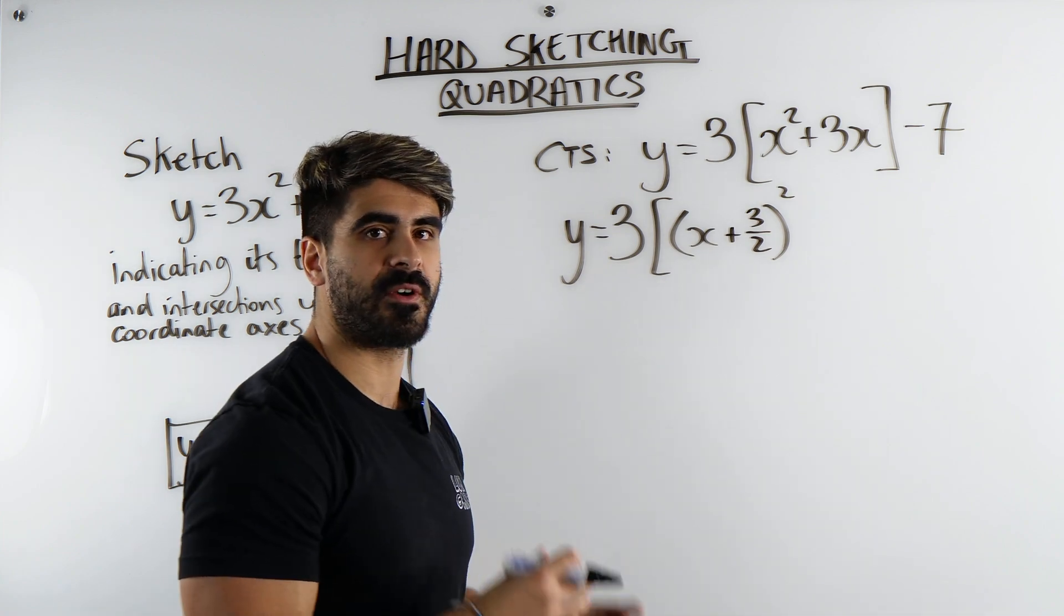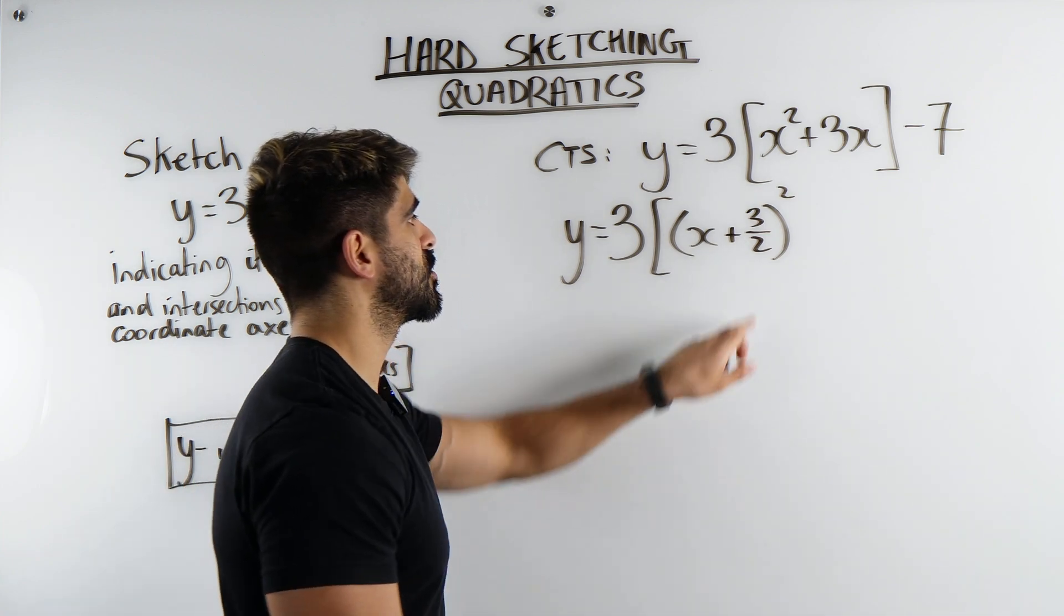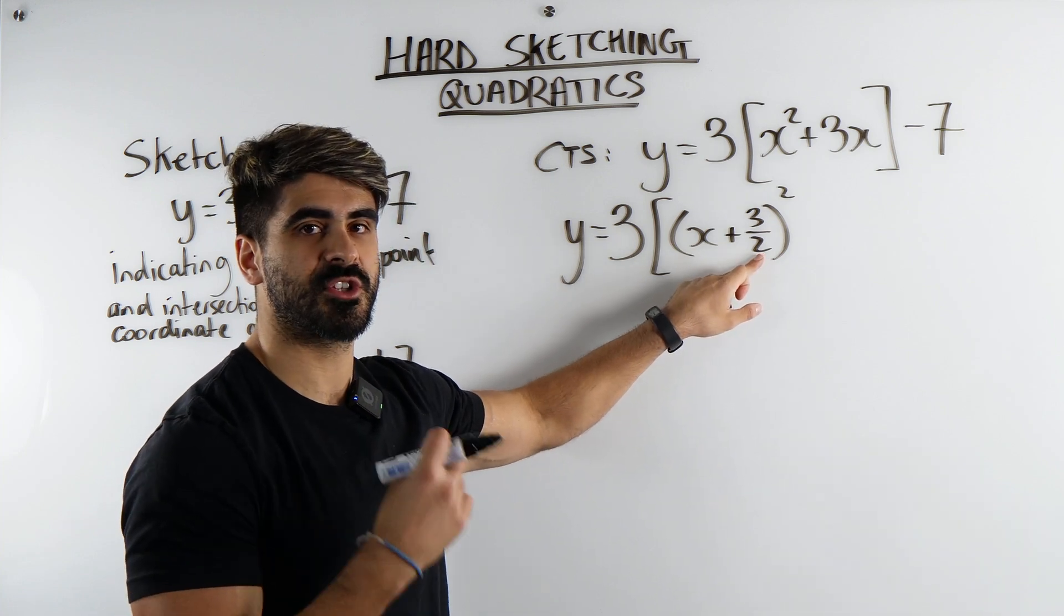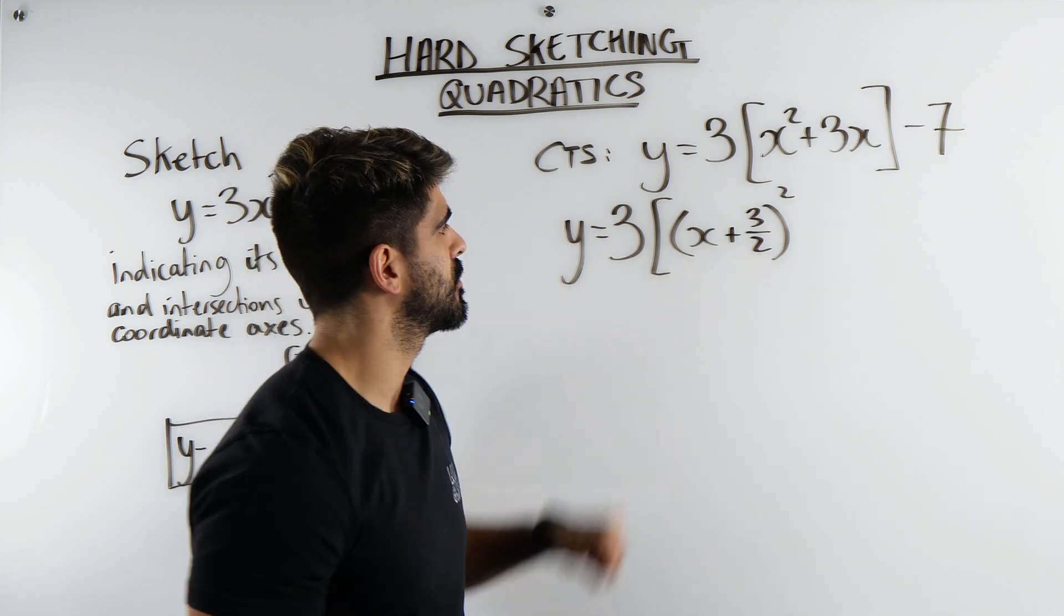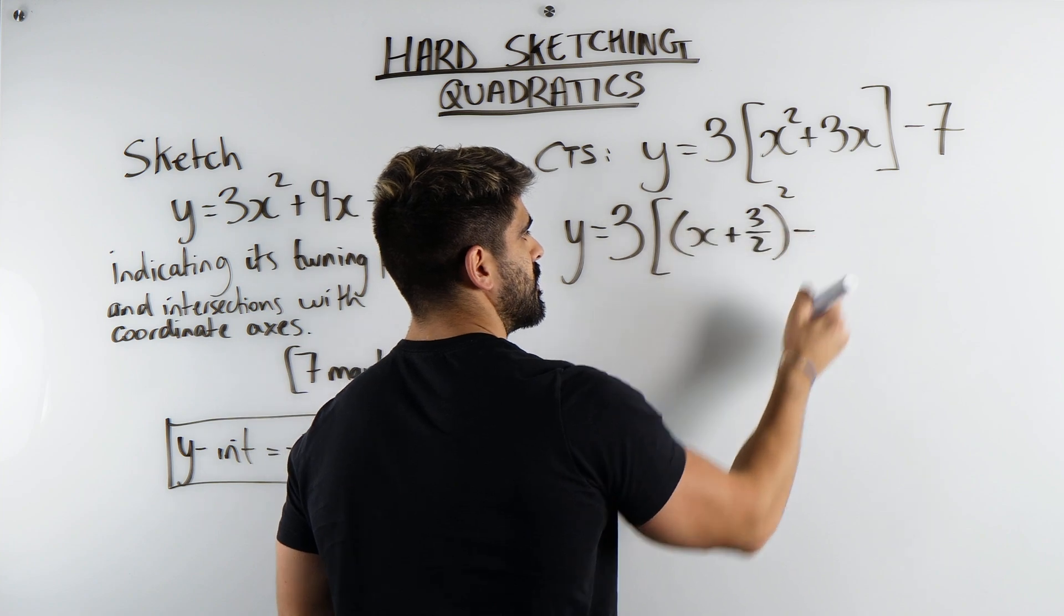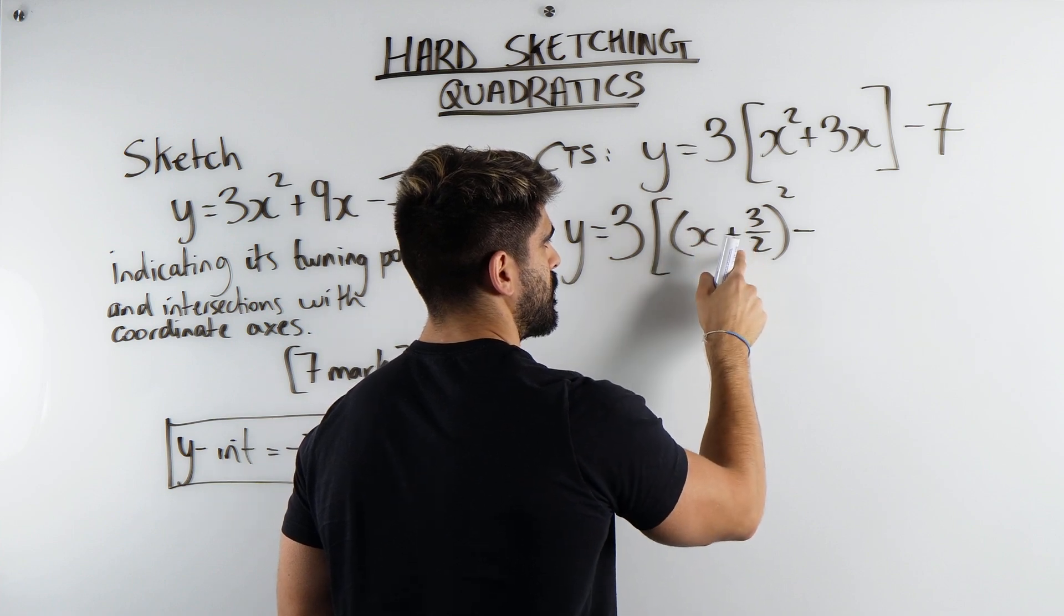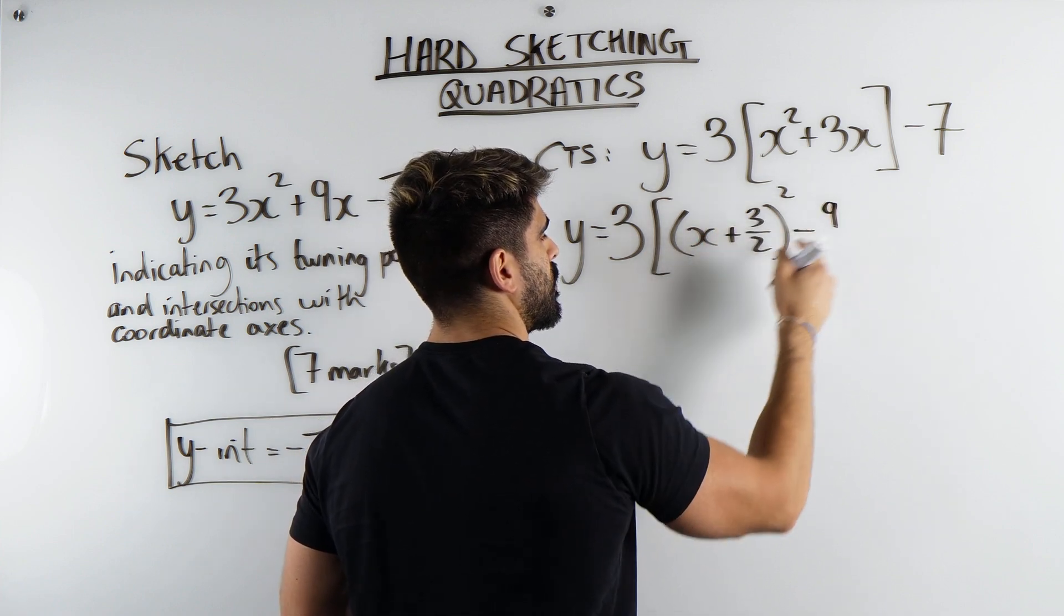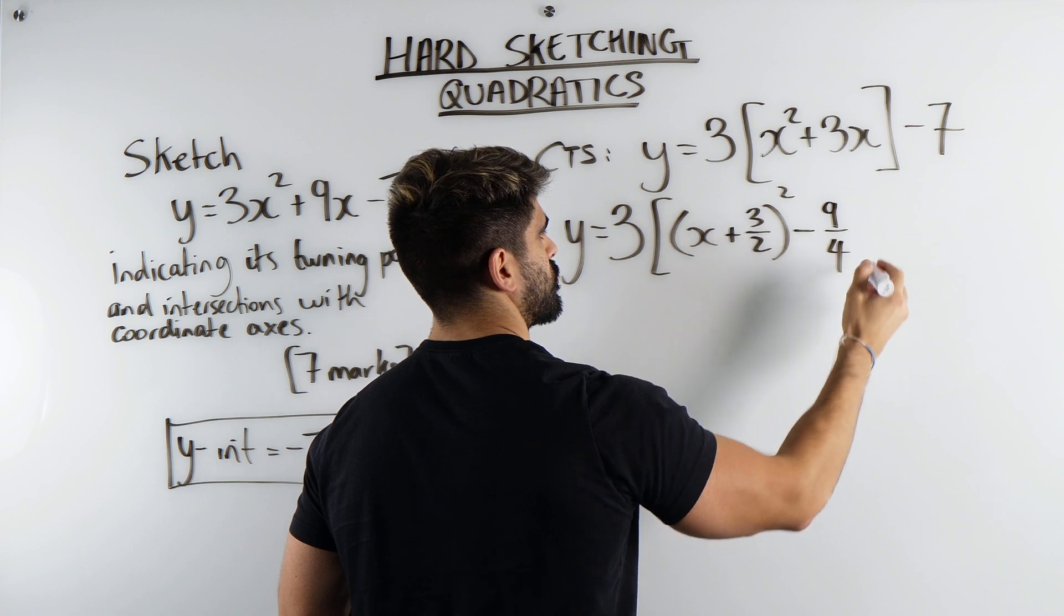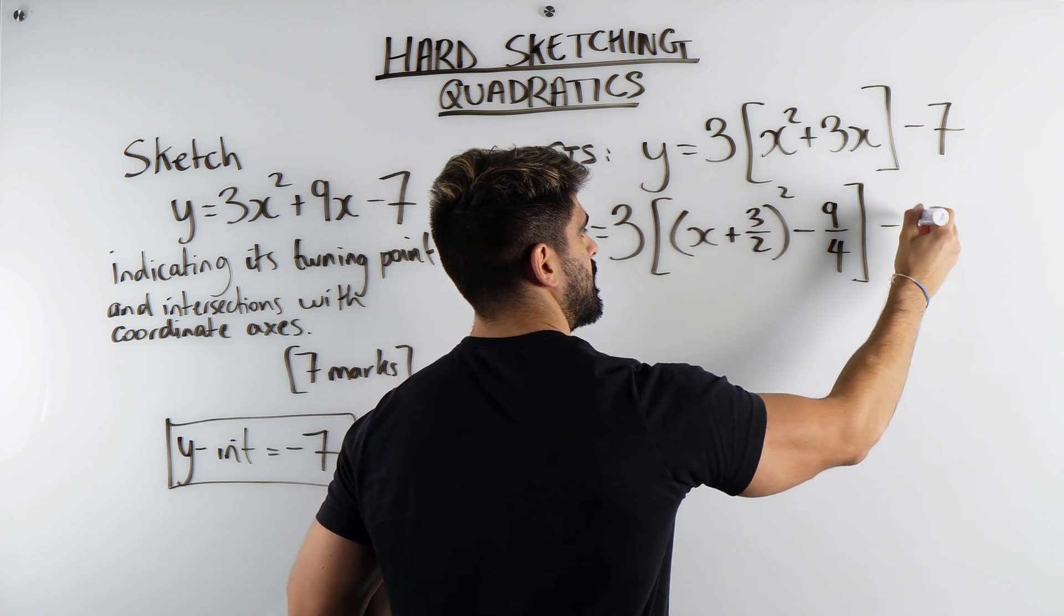So we're always going to minus that number squared. When you square the fraction, you just square the top and the bottom. 3 squared, 9, 2 squared, 4. Close that bracket, minus 7.